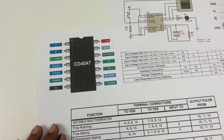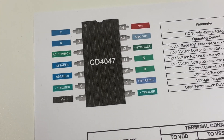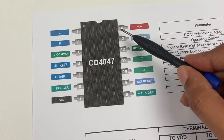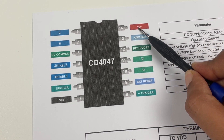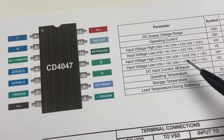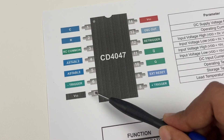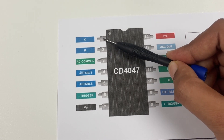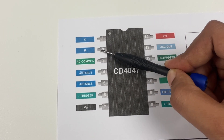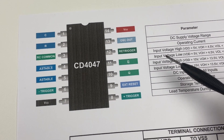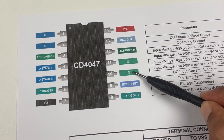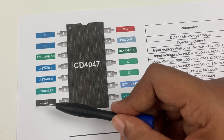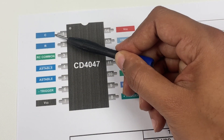Let's start with the pinout of this IC. There are 14 pins for CD4047 and it might look complicated but it is very simple. The 14th pin is VDD where we give power to the IC, either 5 volts or up to 15 volts. VSS is the ground pin. The C pin connects a capacitor, the R pin connects a resistor, and there are three outputs: Q, Q-latch, and the oscillator output.